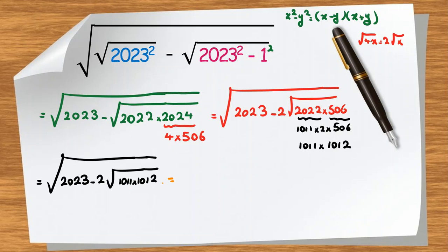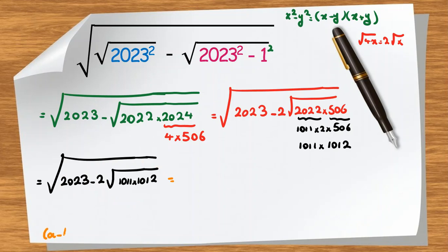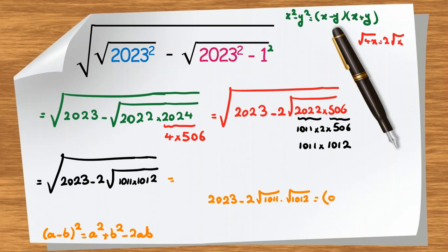We want to write the inside as a perfect square. We use the identity that a minus b squared equals a squared plus b squared minus 2ab. So we need to match the form: 2023 minus 2 times the square root of 1011 times 1012 with a squared plus b squared minus 2ab.